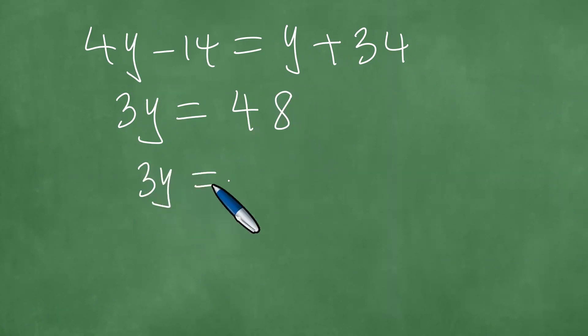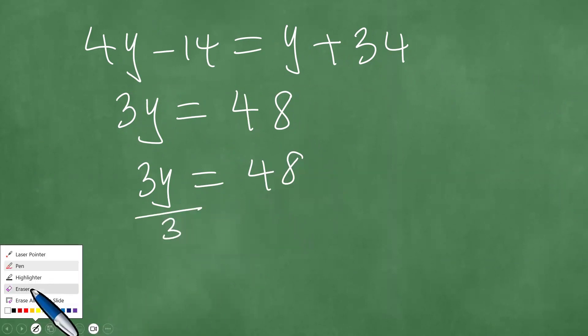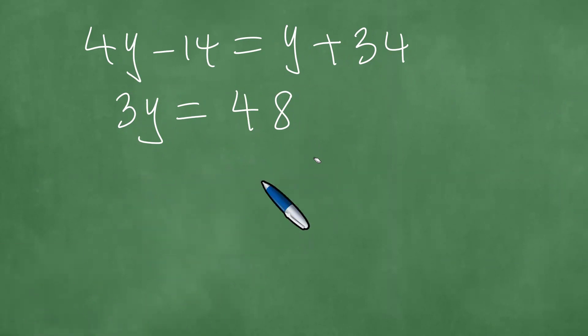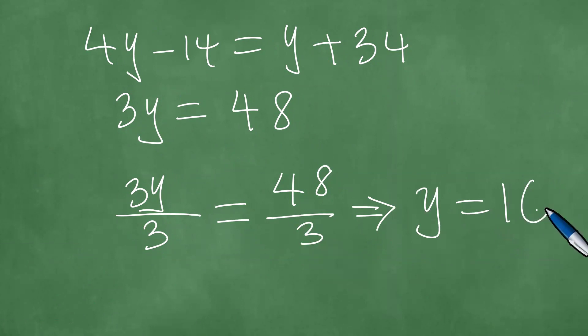Which means three Y equals 48. You divide the left by three, and you also simultaneously divide the right by three. Which means Y is equal to 16.